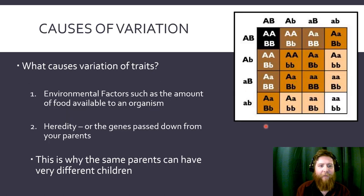Some causes of variation: things that cause traits are environmental factors, such as the amount of food available to an object, or heredity, the genes that are passed down from your parents. Here's a Punnett Square showing different dog fur color for labs. But because there's so much variation and other factors at play, even parents can have children that look very much different from one another. Even though they're very closely related, they have very different, unique traits.